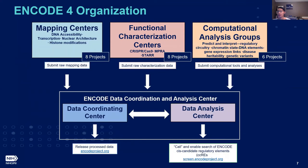We also have eight functional element characterization centers where they are developing and applying generalizable approaches to characterize the role of candidate functional elements in specific biological contexts — learning best approaches that will enable better understanding of the ENCODE catalog. They are also reserving part of their experimental capacity to test a common set of elements, allowing for comparison across approaches.